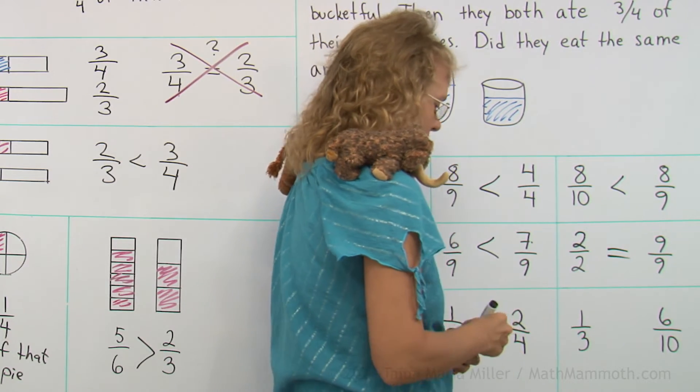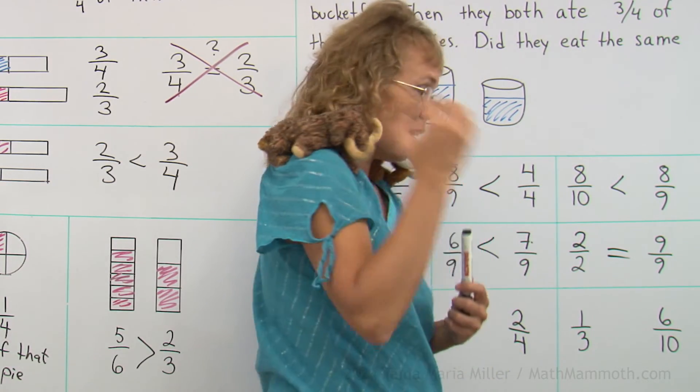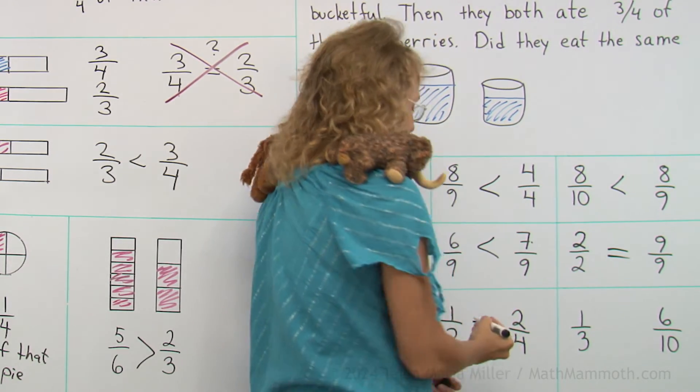One-half and two-fourths. A gigantic nose is the answer. Correct! These are equal. Yes.